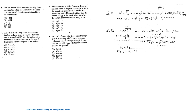Note that sin(30°) = H / L (the length of the plane), so H = L·sin(30°). Substituting this expression for H gives the final speed at the bottom of the incline.